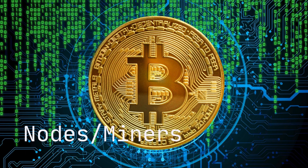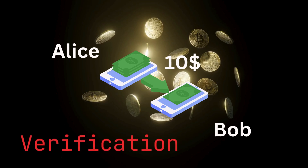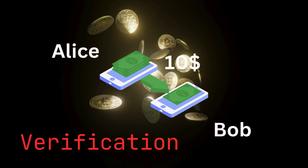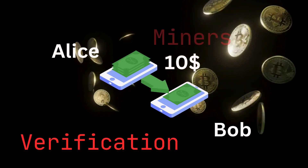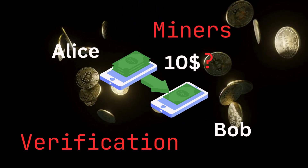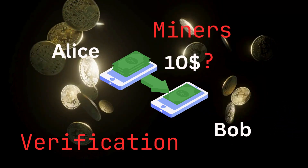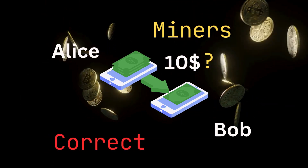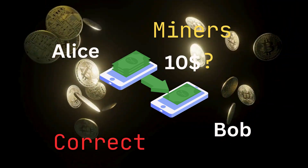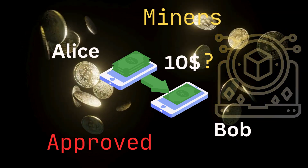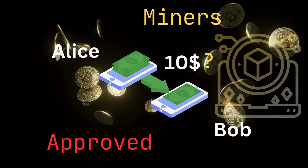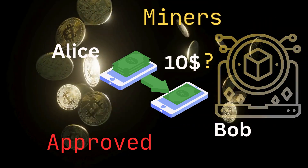These computers are called nodes or miners, and they verify transactions. Step 3 — Verification by miners: miners check whether Alice has at least $10 in her account and whether her signature is valid. If everything is correct, the transaction is approved. Step 4 — Adding to the blockchain: the transaction is added to a block, which is a group of transactions.